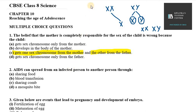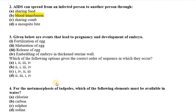The second question is: AIDS can be spread from an infected person to another person — but we have to find how. The options are sharing food, blood transfusion, sharing a comb, and mosquito bite. The right option is blood transfusion — that is, from an infected person to a healthy person. That's why the disease can spread.